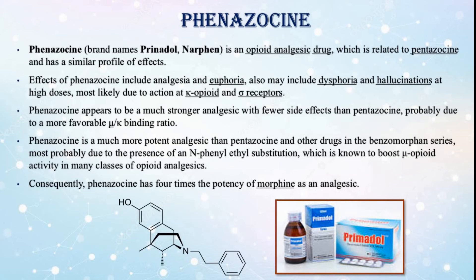Phenazocine. Phenazocine, brand names Prinadol and Narfen, is an opioid analgesic drug which is related to pentazocine and has a similar profile of effects. Effects of phenazocine include analgesia and euphoria, and may also include dysphoria and hallucinations at high doses, most likely due to action at kappa-opioid and sigma receptors. Phenazocine appears to be a much stronger analgesic with fewer side effects than pentazocine, probably due to a more favorable mu- to kappa-binding ratio.